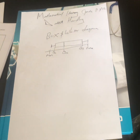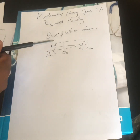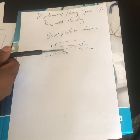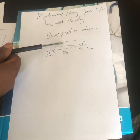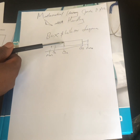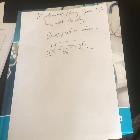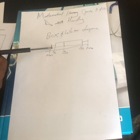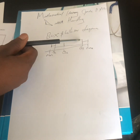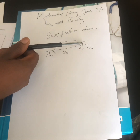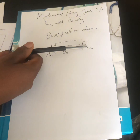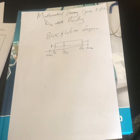If a question asks you to find the median of a box and whisker diagram, we locate it using the middle line. If they ask about Q1, you locate Q1 using its line; Q3 using its line; the max using its line; and the minimum using its line.